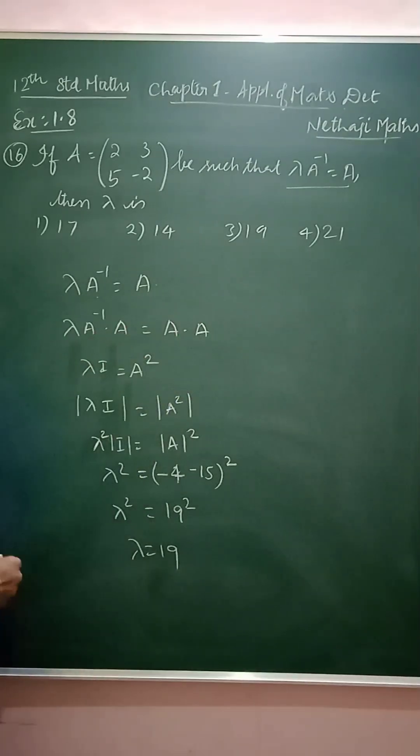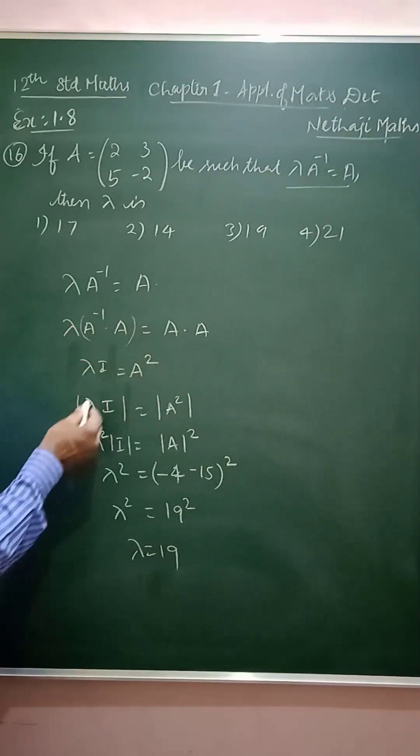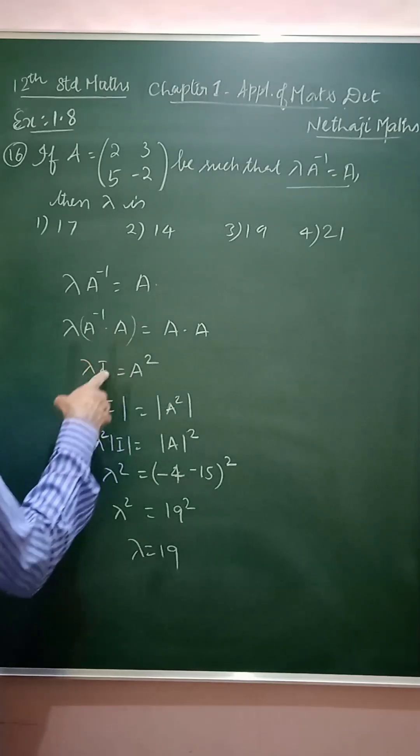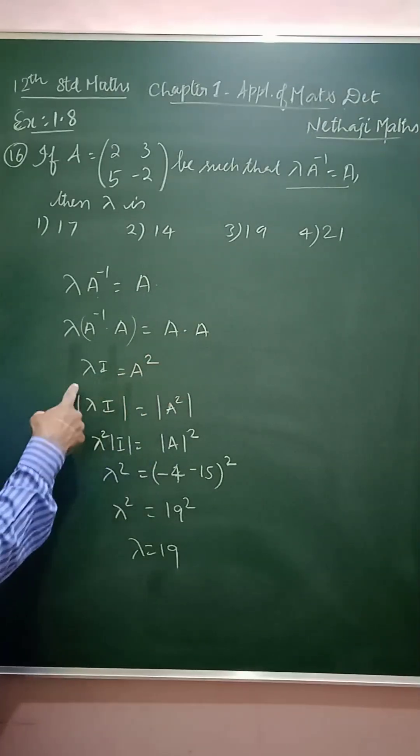So, this side will be A into A, and this side will be A into A. Because A into A inverse becomes I. A into A inverse is I. So, in the right side is A square.